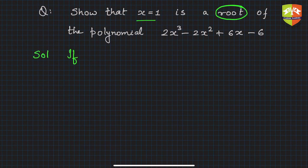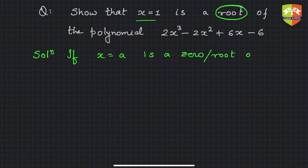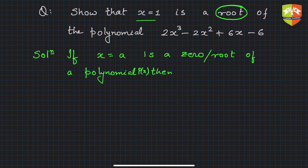If x equals a is a zero or root of a polynomial P(x), then P(a) equals zero. That is what we learned. So in this case, if x equals 1 is a root of this polynomial, then let's find out P(1).